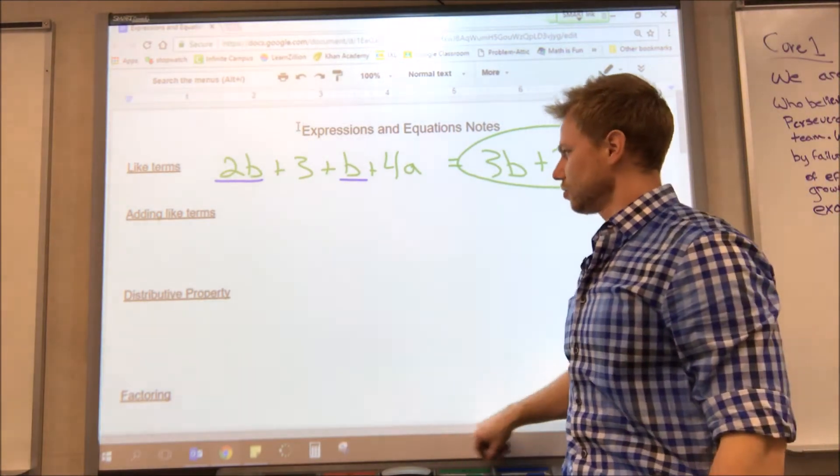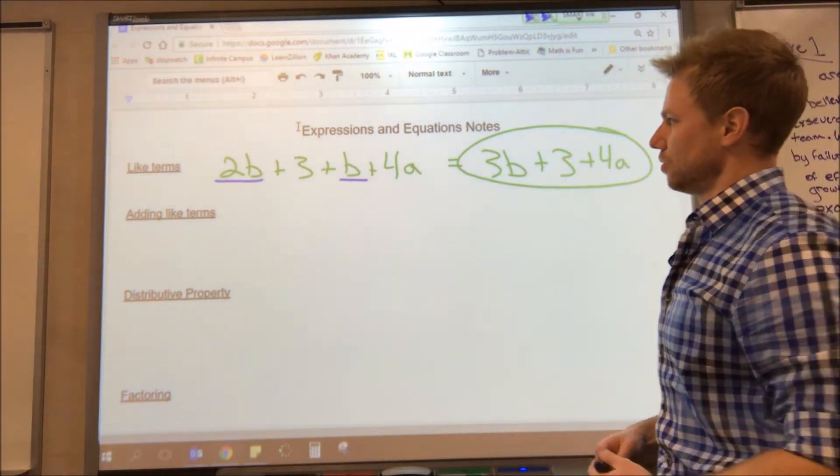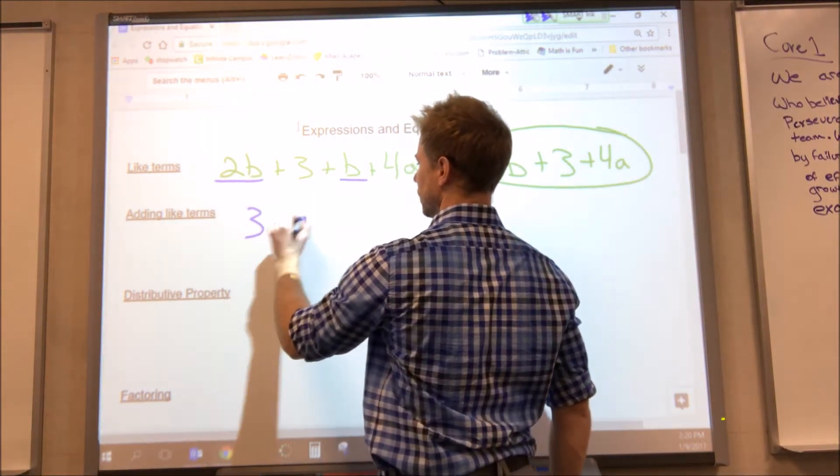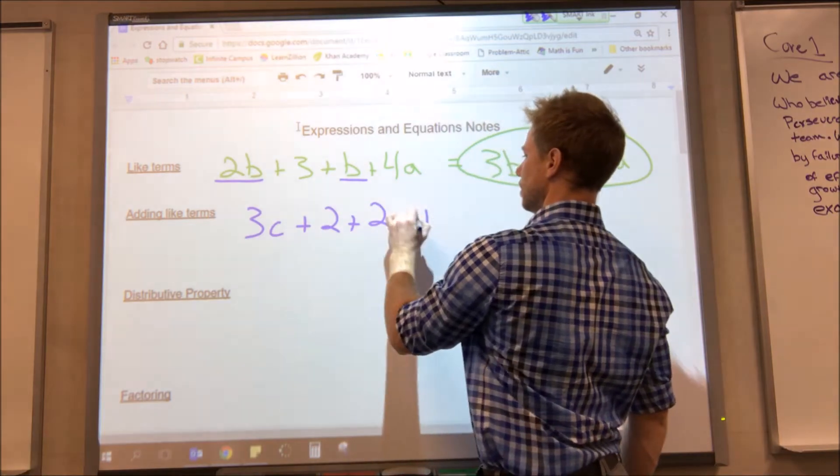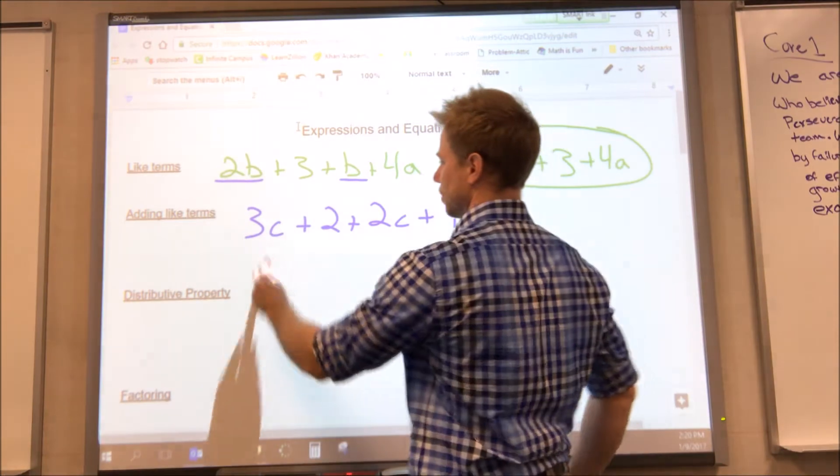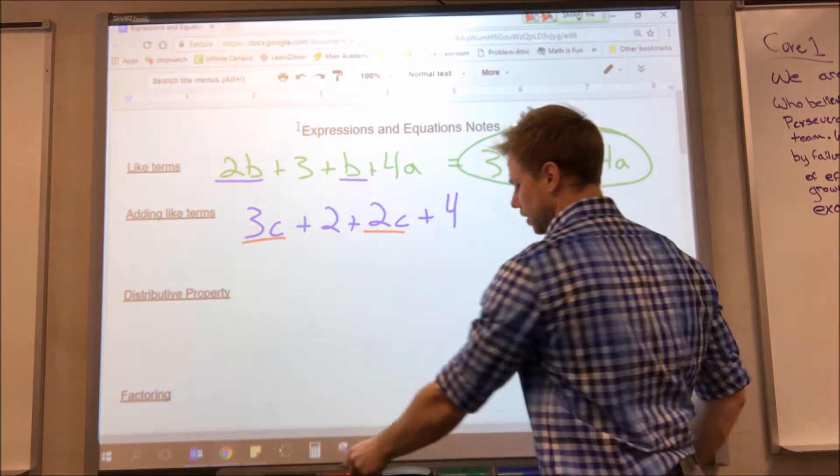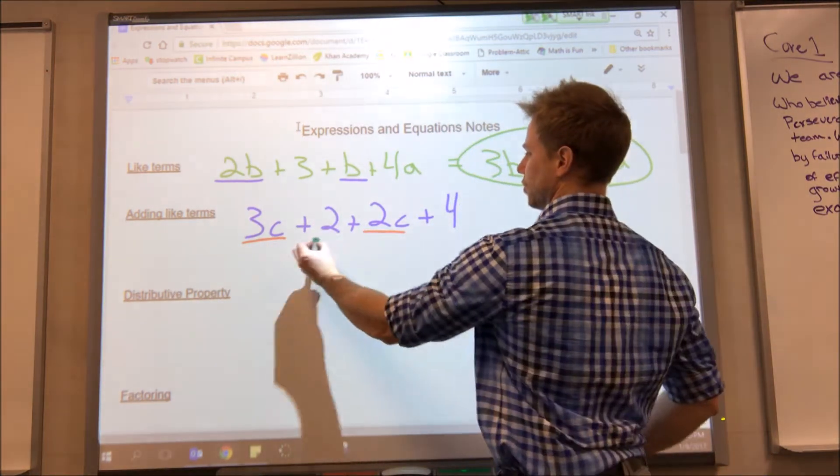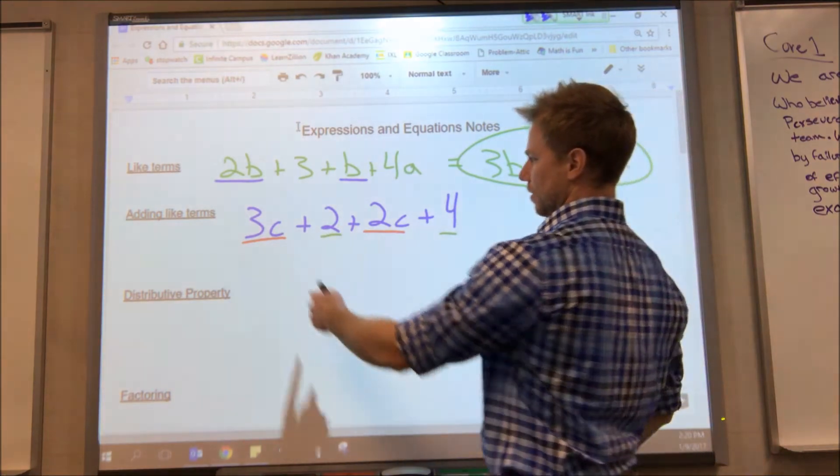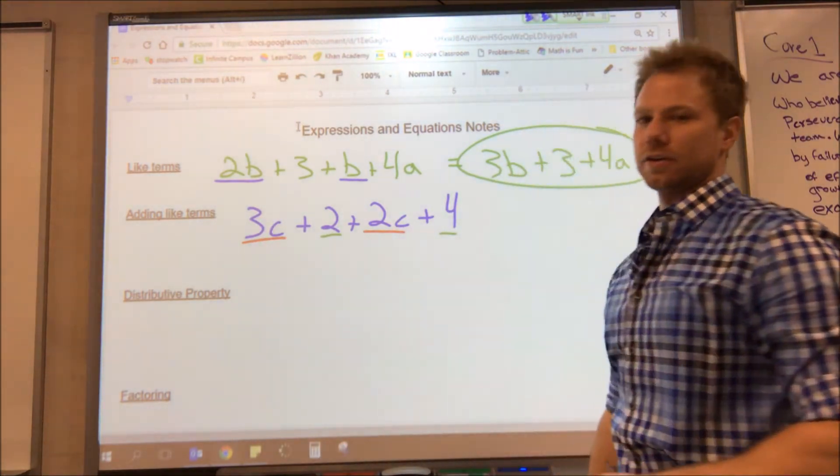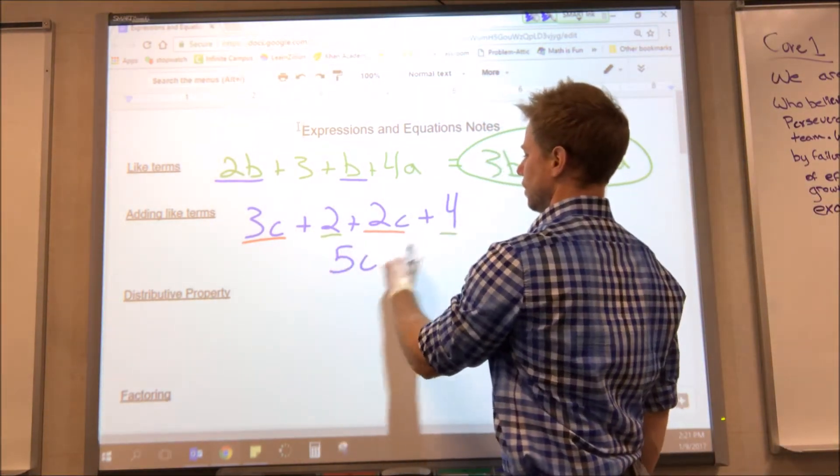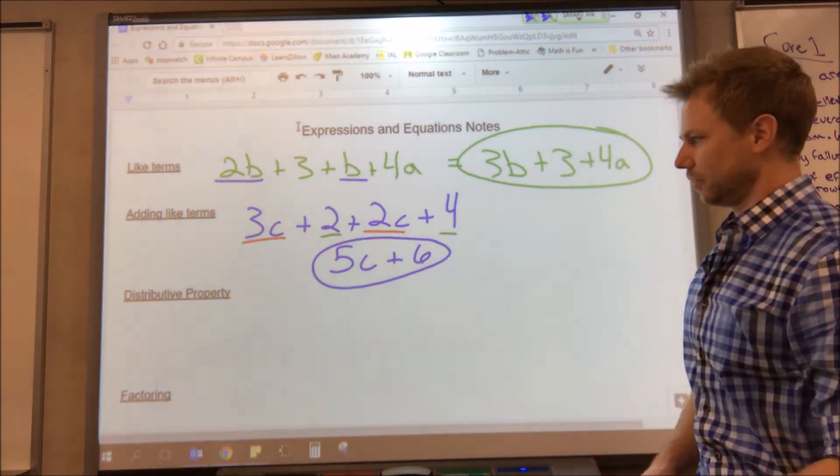Let's do one more example below that. If I had 3c plus 2 plus 2c plus 4, we have like terms. 3c and 2c are like terms. 2 and 4 are like terms. So we could add 3c and 2c together, which makes 5c. We can add 2 and 4 together, which makes 6. And that would be simplified.